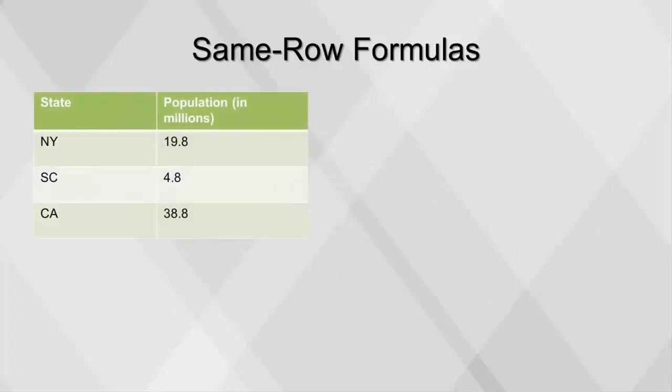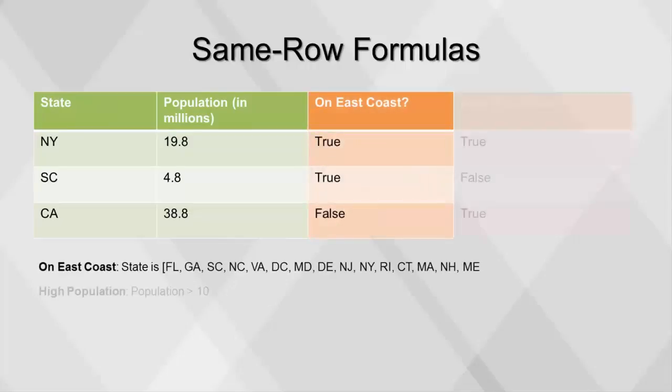This table depicts the population of states. We can use a formula to create a column that displays whether the state is on the east coast. We can also create a column to display whether the state has a high population.